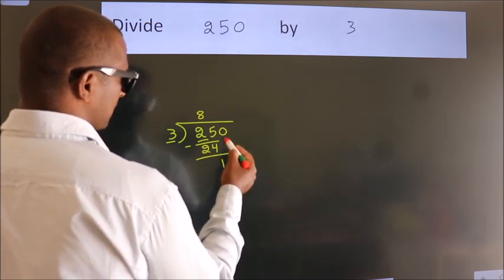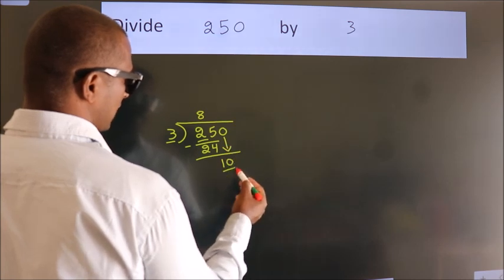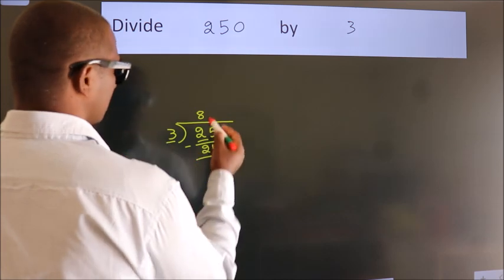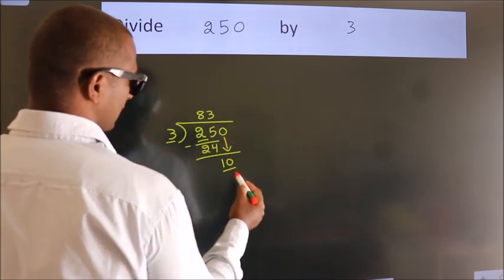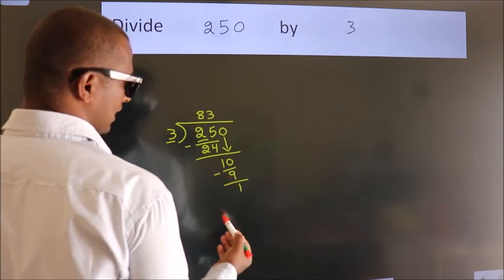After this, bring down the next number. So 0 down. So 10. A number close to 10 in the 3 table is 3×3=9. Now we subtract, we get 1.